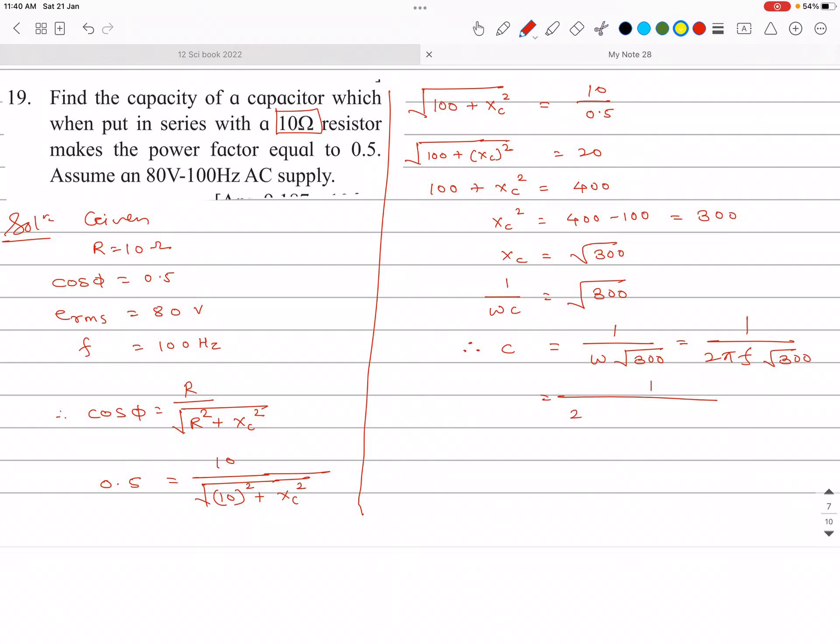1 upon 2 into pi is 3.142, frequency they give 100 hertz into this root 300. Now we have to simplify this to get a value of this capacity.